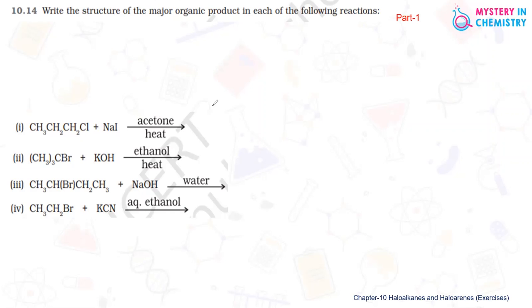First one is this compound, 1-chloropropane, when reacting with sodium iodide in presence of acetone and heat. This reaction is Finkelstein reaction and here chlorine is replaced by iodine.